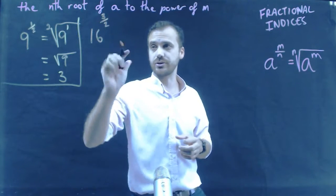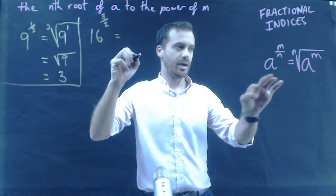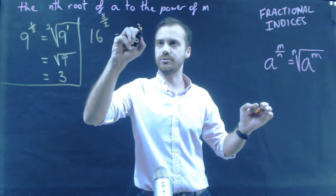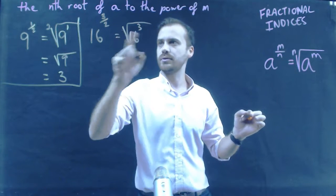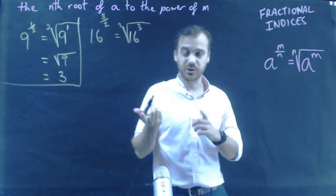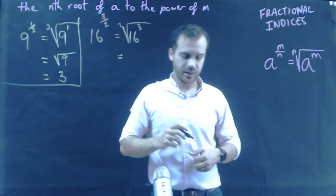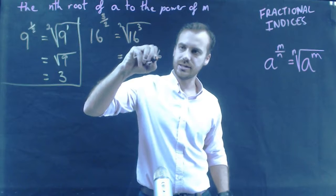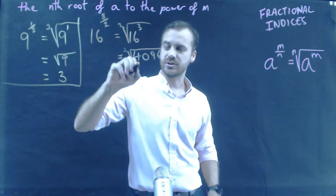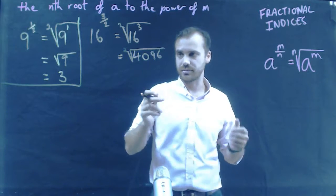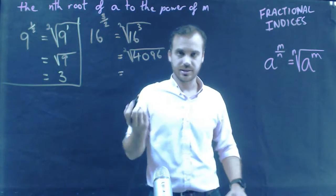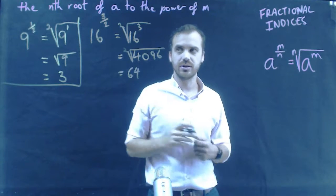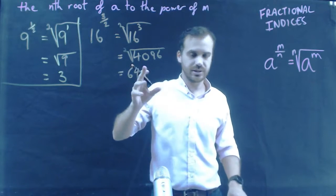A second example: 16 to the power of three on two. That's going to be the base 16, to the power of whatever's on the top — three — with the square root. We don't have to put two there because it's a square root. So I'm going to put 16 cubed into my calculator and get 4,096, then take the square root of 4,096 — and it's 64.